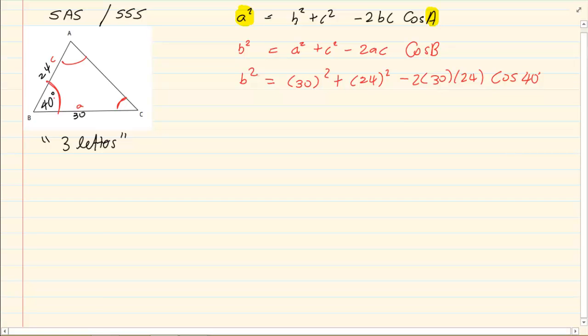b squared is equal to 30 squared plus 24 squared minus 2, 30 times 24 cos 40. Now you press that in your calculator and we get b squared is equal to 372.9.